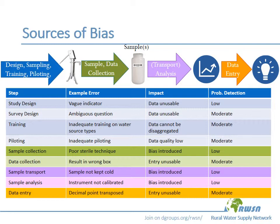Similarly, if we're doing chemical analyses in the field, we need to make sure that our field instruments are properly calibrated and maintained. And if we transport samples for analysis at a laboratory, we need to make sure that we're doing appropriate sample preservation where necessary, to ensure that the concentrations when the sample is analyzed are representative of the concentrations that were there when the sample was collected. There are also many different ways that data entry errors can occur, and if we don't manage those properly we can get unusable data. We need to think not only about the impact of these types of errors and biases, but also how likely we are to catch them if they're occurring, and therefore be able to take appropriate action to address them.